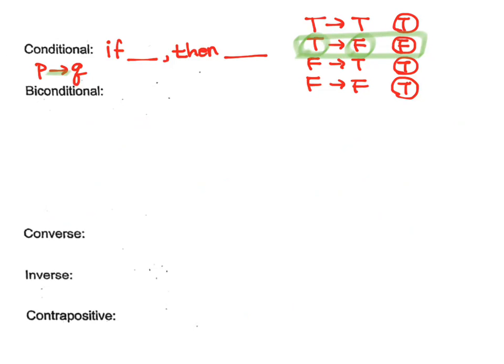Biconditional — the common words you'll see are 'if and only if.' That's the common wording you will see in a biconditional statement. For example: 'a triangle is an equilateral triangle if and only if it has three congruent sides.'